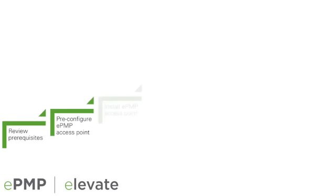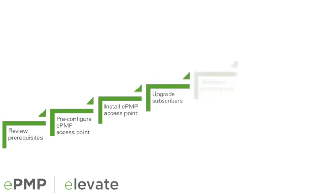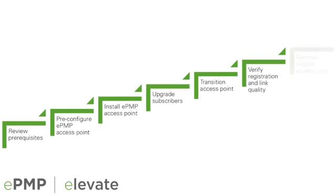The ePMP Elevate Migration consists of seven main steps, including reviewing prerequisites and requirements, pre-configuration of the ePMP access point, installation of the ePMP access point, subscriber upgrade, transition of subscribers to the ePMP access point, verification of subscriber registration and link quality, and removal of original access point equipment.